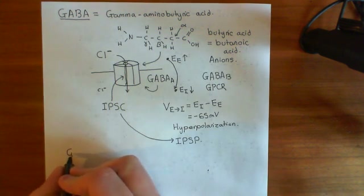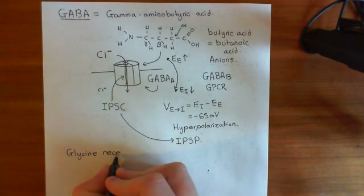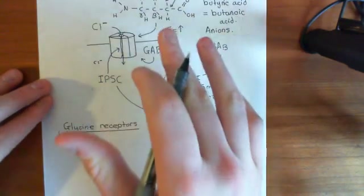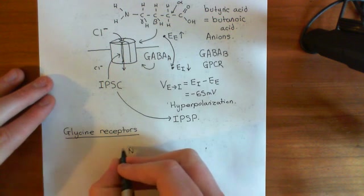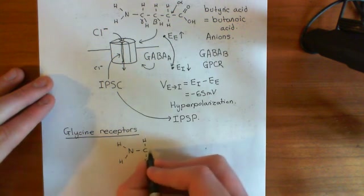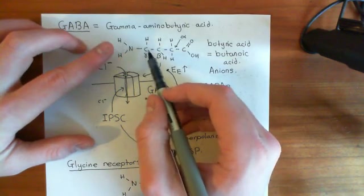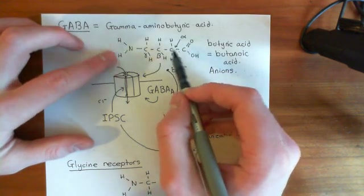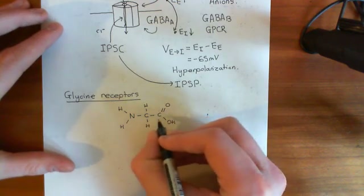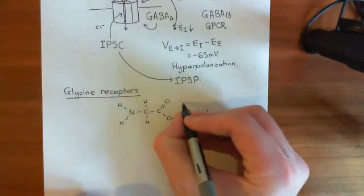Similarly, there are also glycine receptors, which are again members of the cis-loop ligand-gated ion channel family. They are pentameric, and each subunit has a cis-loop structure. Just as GABA is the main inhibitory neurotransmitter in the brain, glycine is another amino acid — a proteinogenic amino acid. It has one carbon between the two functional groups, and it's the simplest proteinogenic amino acid because its R group is just a single hydrogen. You can see how glycine is almost a smaller version of GABA.